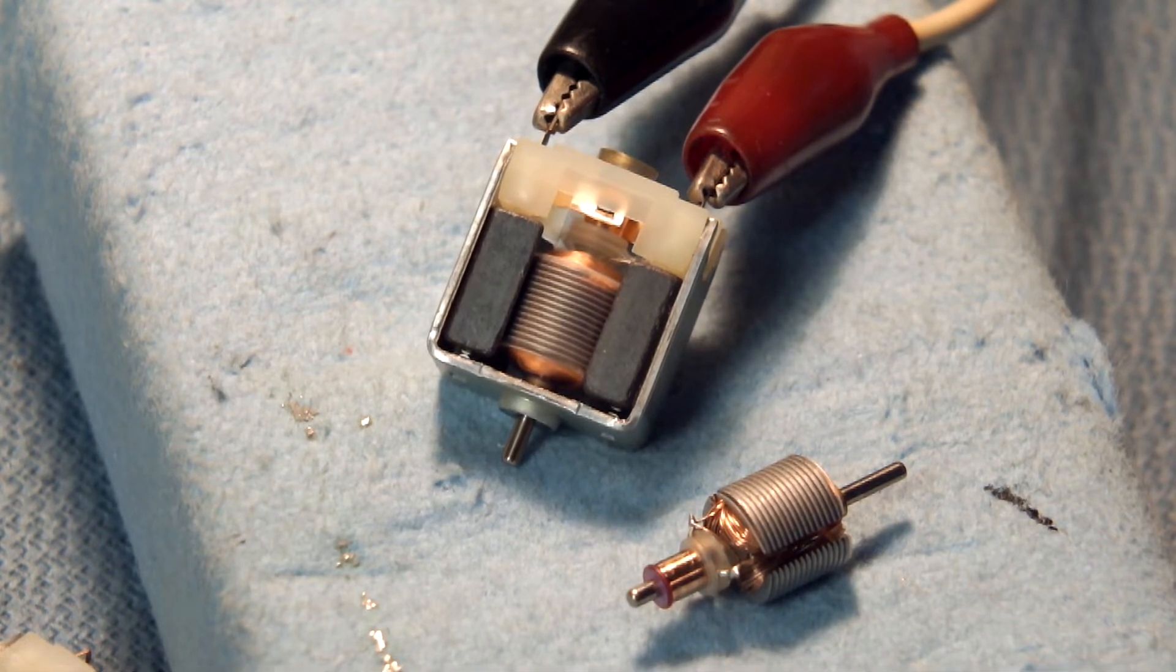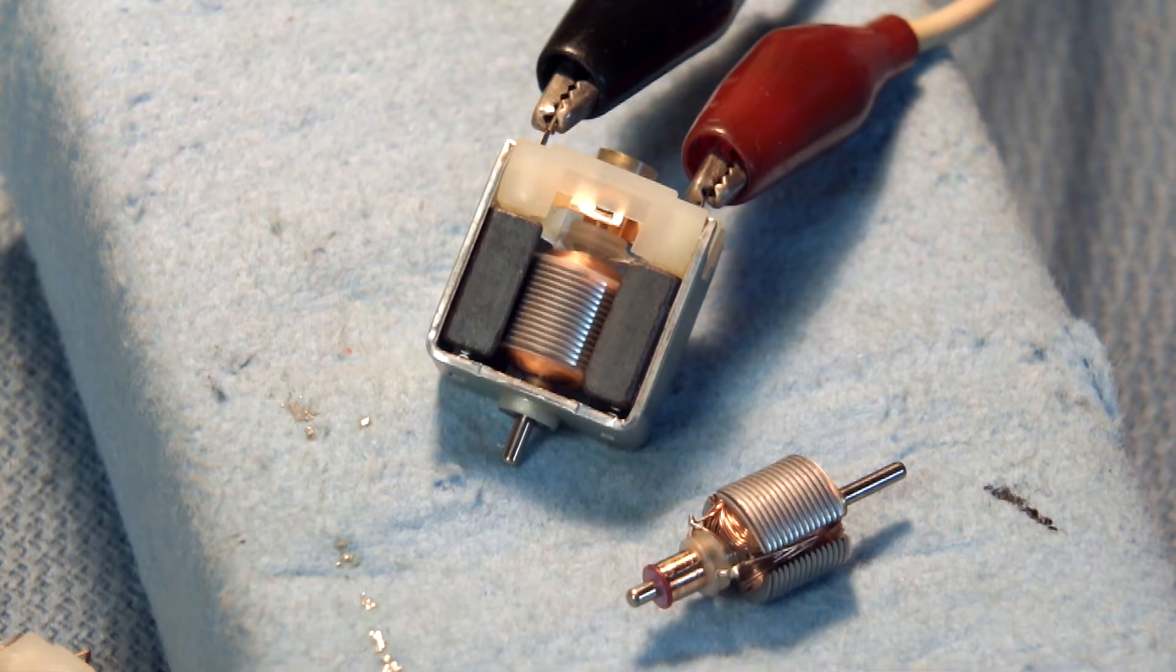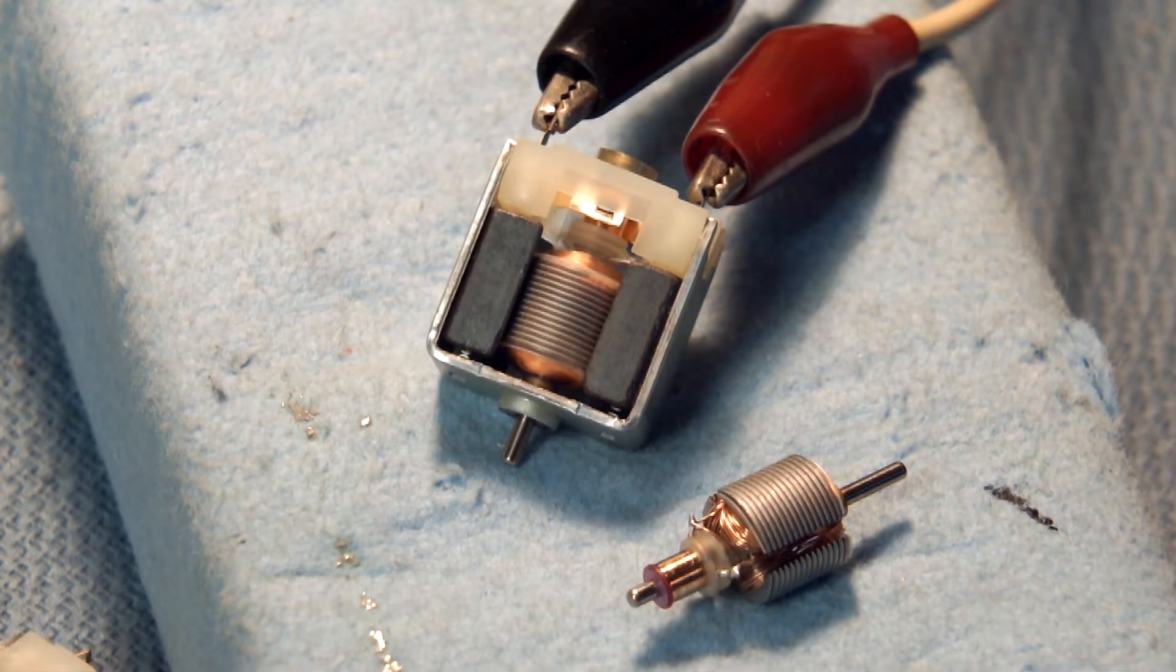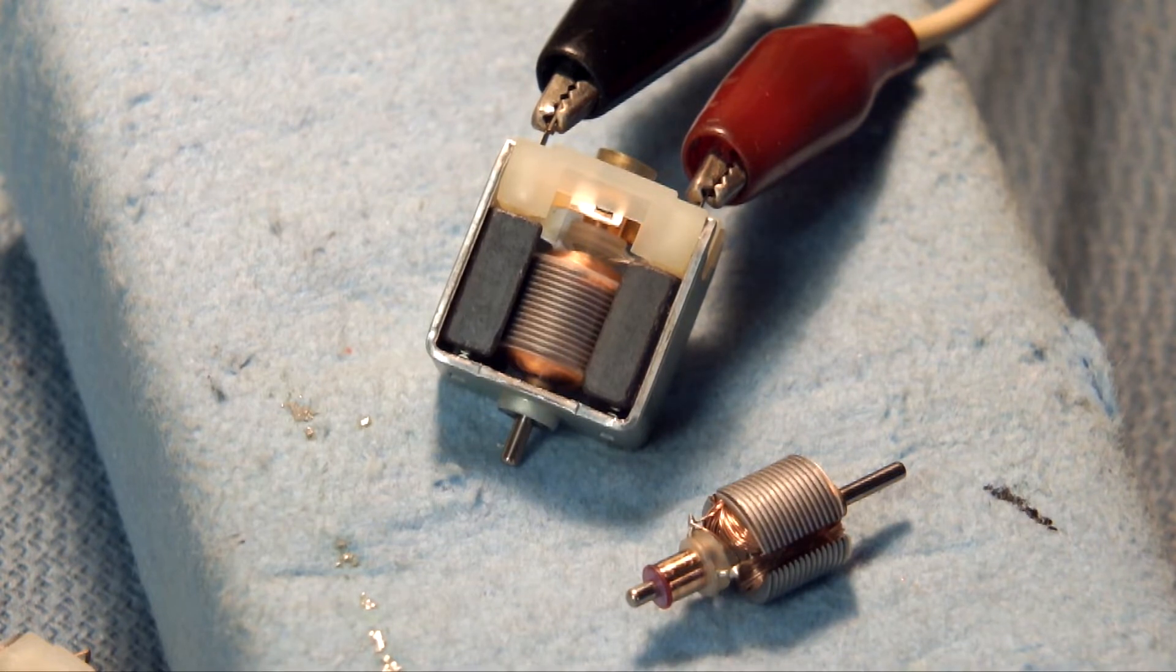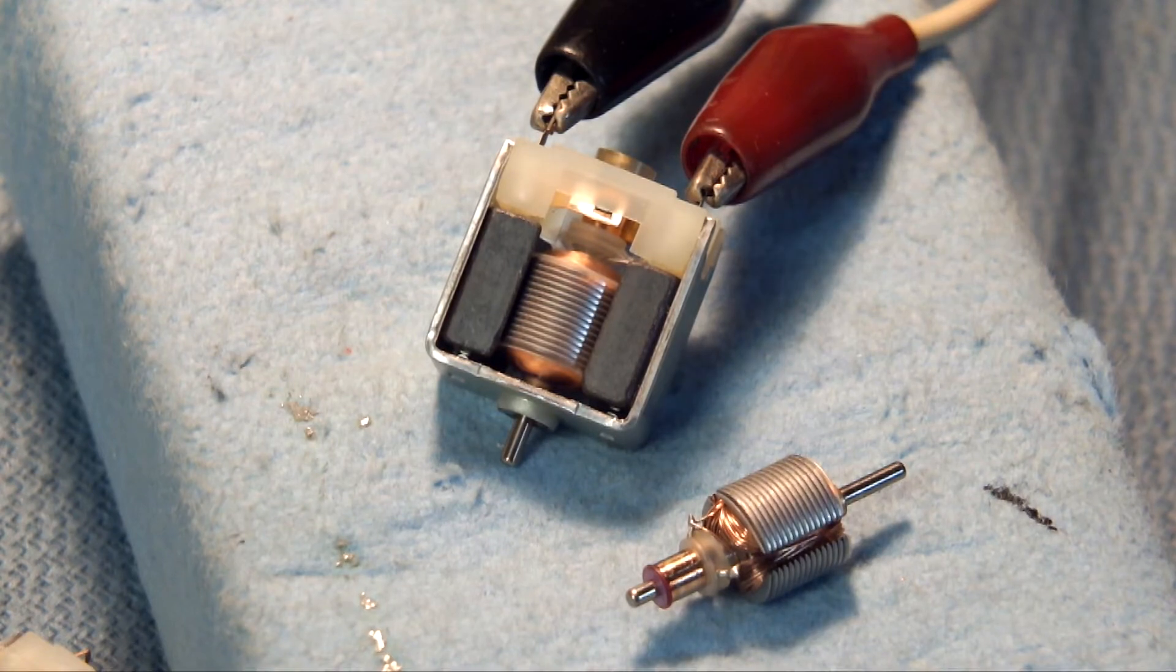All right, so that's five volts, drawing about six tenths of an amp at five volts. Normally a six ohm motor won't even be drawing a tenth of an amp. All right, six volts and we're about seven tenths of an amp.